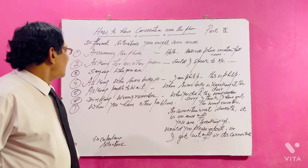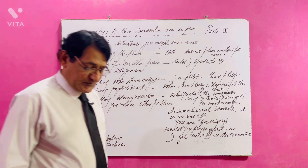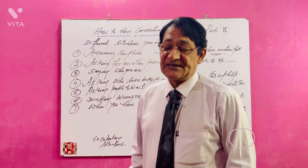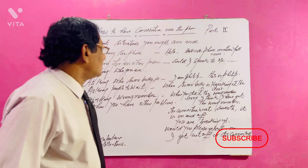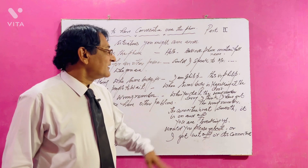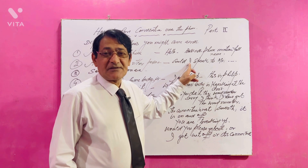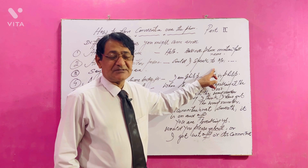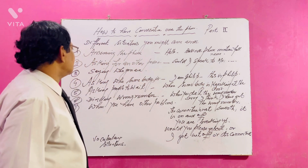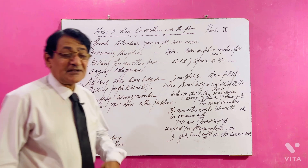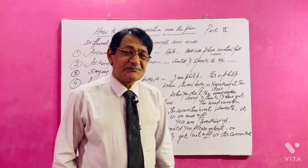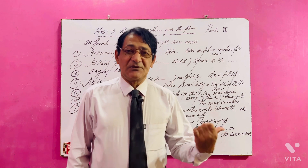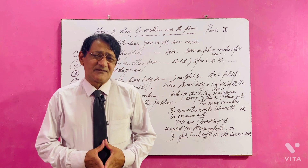Asking for another person: suppose you dial your friend's number and your friend isn't available, and someone else picks up. You could say 'Could I speak to Mr. David?' If that person is available at the office, the response would be 'Yes, I am going to put you through,' meaning they will transfer your call. To find out who is calling, you can ask: 'Who is calling, please?'